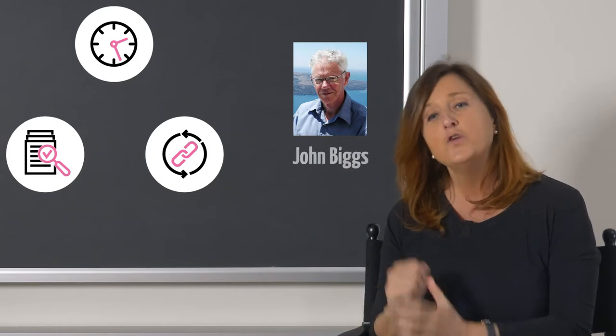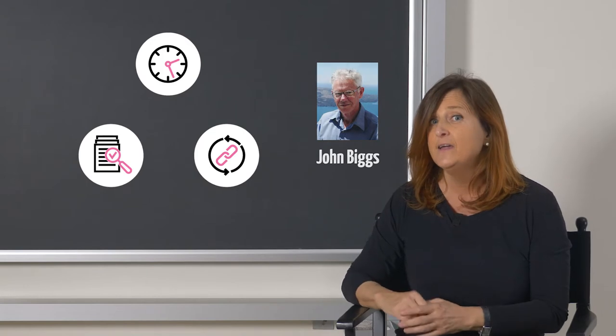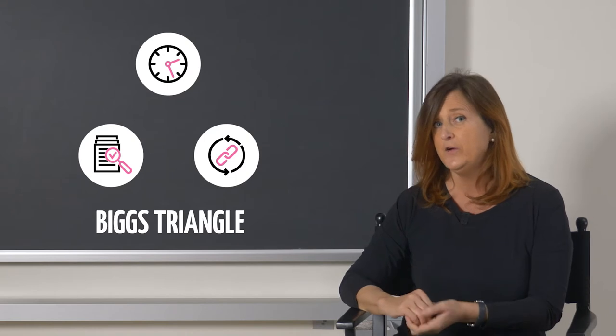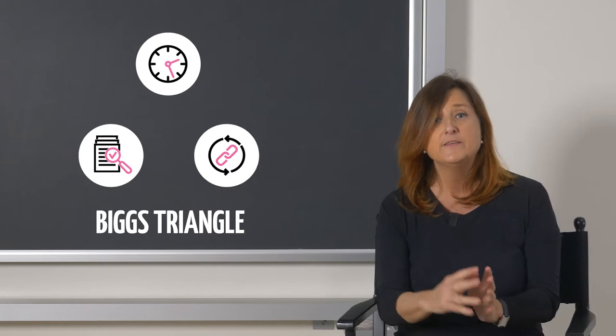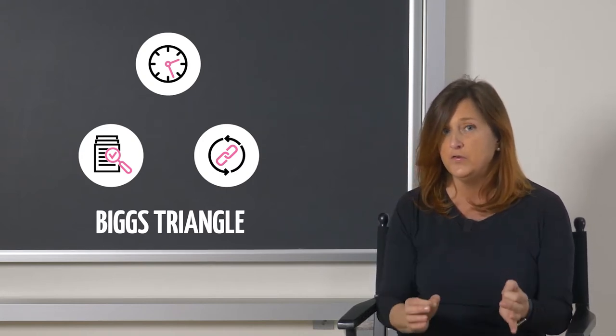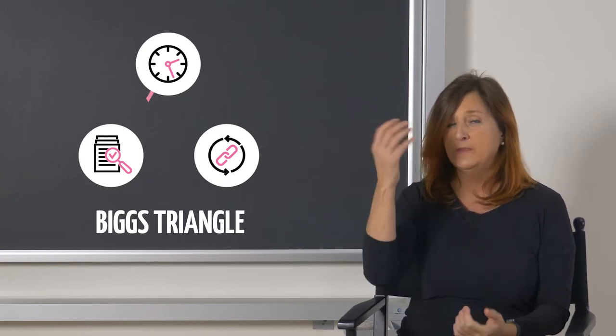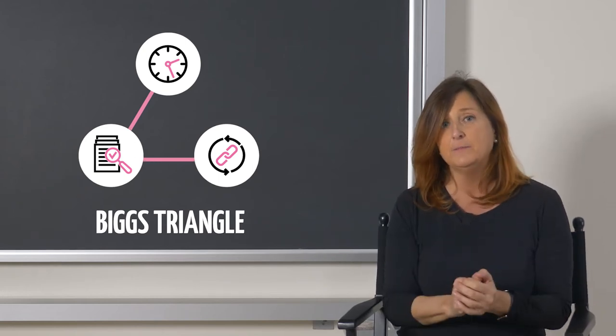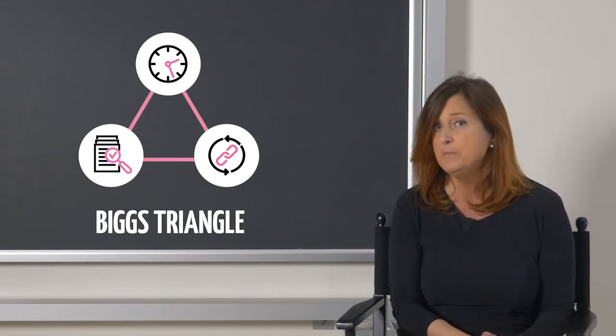This man is John Biggs, a famous pedagogist born in Tasmania. He designed a very helpful logical tool called the Biggs Triangle. What does the Biggs Triangle tell us? It tells us that the prerequisite for effective teaching is that there is a correct logical alignment among the intended learning outcomes, the teaching and learning activities, and the assessment strategies that allow us to observe if the intended learning outcomes have been met.